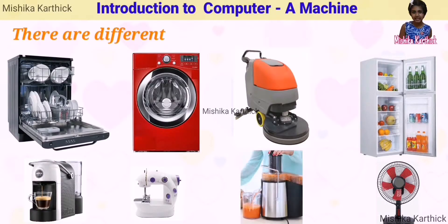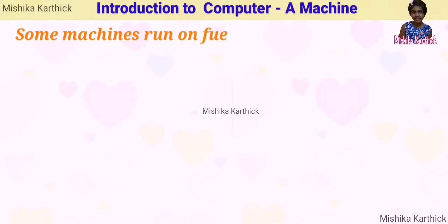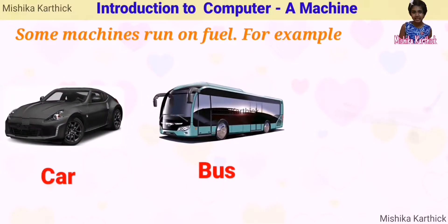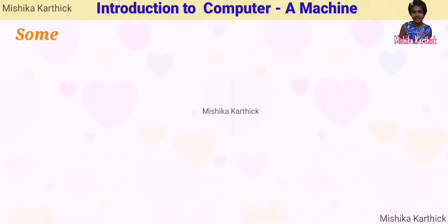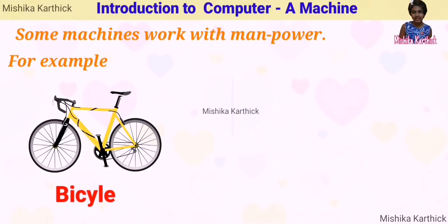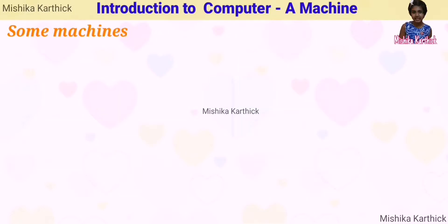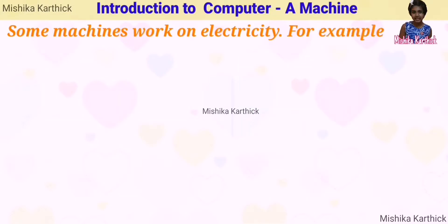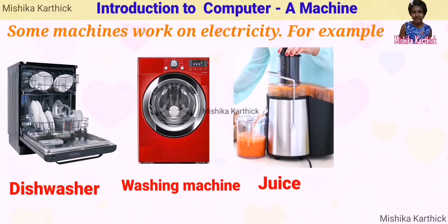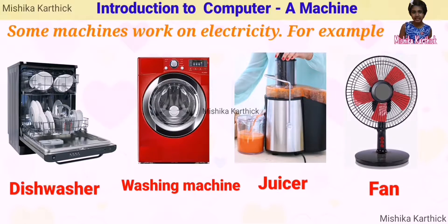There are different types of machines. Some machines run on fuel — for example, car, bus, and aeroplane. Some machines work with manpower — for example, bicycle and rickshaw. Some machines work on electricity — for example, dishwasher, washing machine, juicer, and fan.